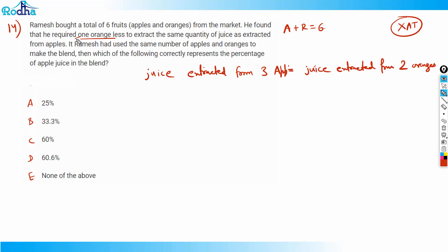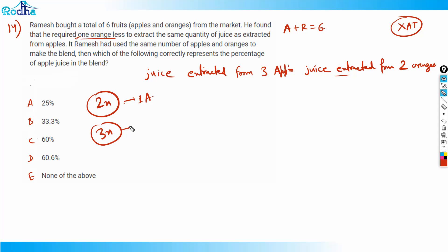Reading the statement again: since one orange less was required to extract the same quantity of juice as extracted from the apples, the juice extracted from three apples equals the juice extracted from two oranges. So I assume that 2x is the quantity of juice extracted from one apple, and 3x is the quantity of juice extracted from one orange.